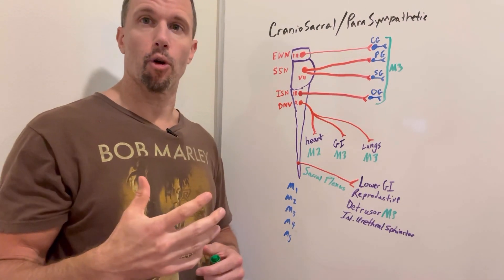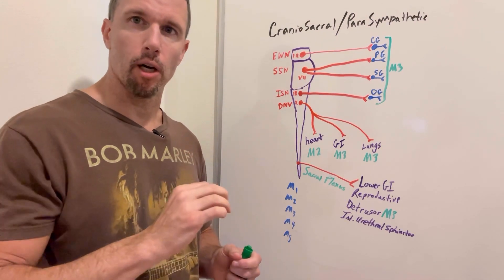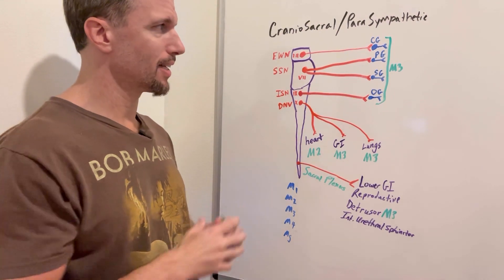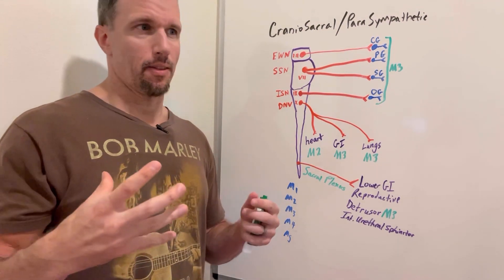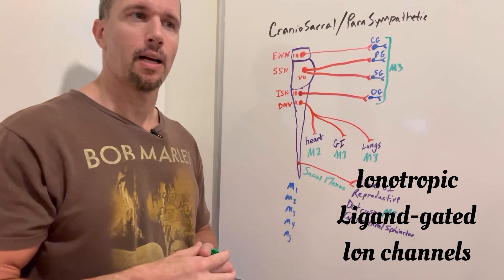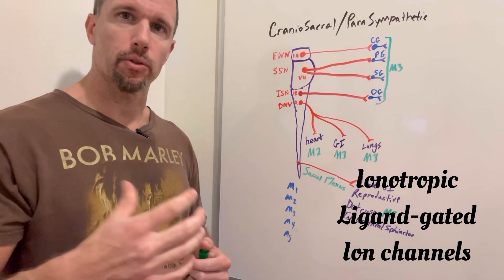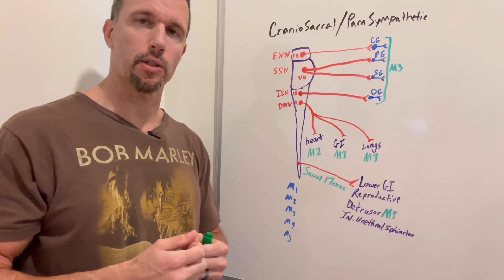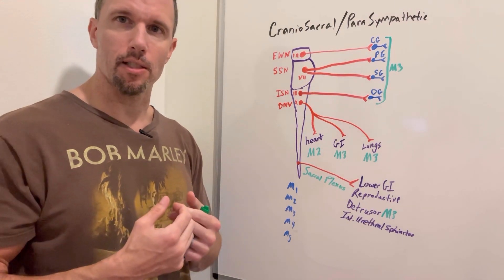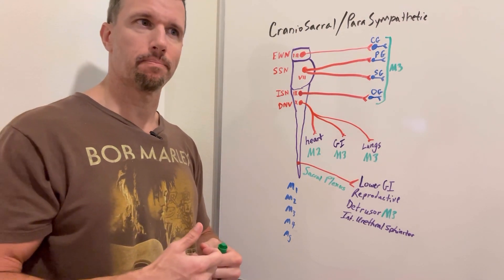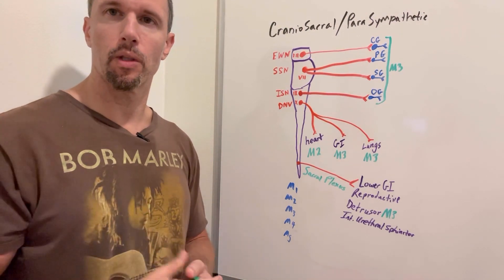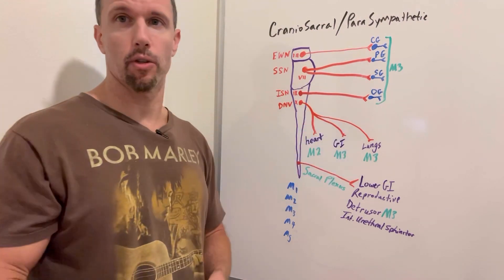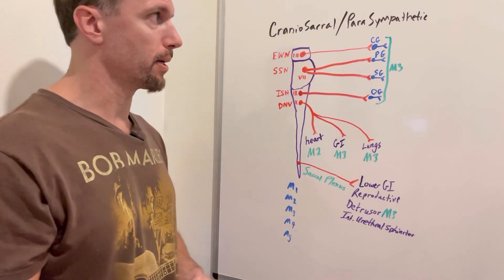The nicotinic receptors are always at this junction from the preganglionic to the postganglionic fibers, and they're also at the neuromuscular junction. They're ionotropic, which means they're ligand-gated ion channels. Whenever acetylcholine gets released and binds to that nicotinic acetylcholine receptor, it causes an influx of positive ions, which is an EPSP - excitatory postsynaptic potential - and it'll set off this postganglionic neuron, which will then carry out the function of that parasympathetic innervation.